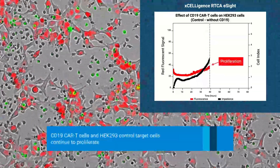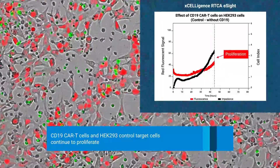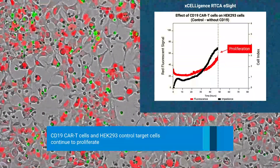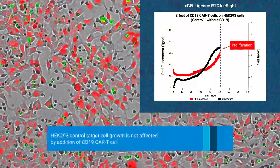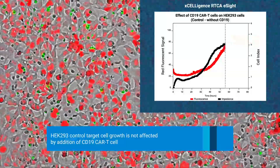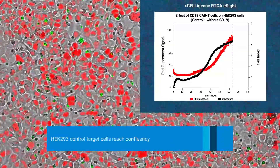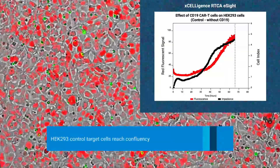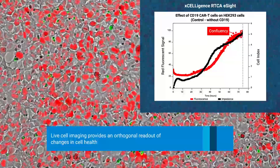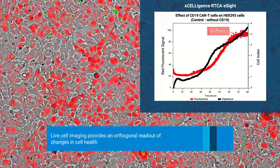The control shows target cancer cells continue to proliferate even after green fluorescently labeled CD19 CAR T cells are added, which is represented by an increase in the cell index impedance signal. Concurrently, the E-Site captures live cell images, providing an orthogonal readout of changes in cell health and behavior.